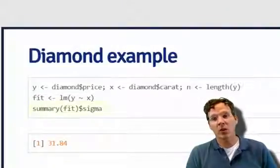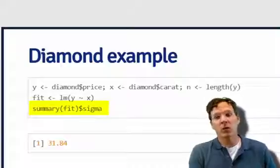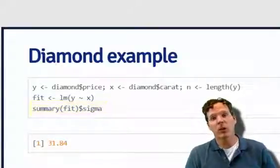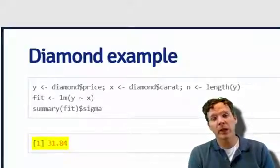However, if you want to grab it as an object that you can assign to something, just put dollar sign sigma. Then you can assign sigma to any other variable, so if you're using it in a program in some other way. This works out in this particular example to be $31.84.